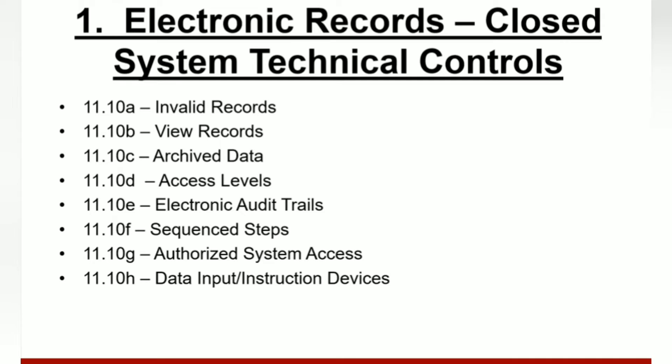For 11.10C, if data is archived off the system, the metadata audit trail must be archived off as well. Again for 11.10C, archived data and metadata must be accurately retrieved even after system upgrades. Again for 11.10C, records must be protected against intentional or accidental modification or deletion.